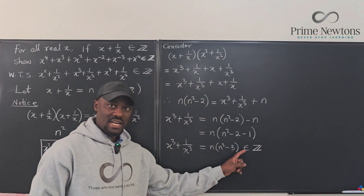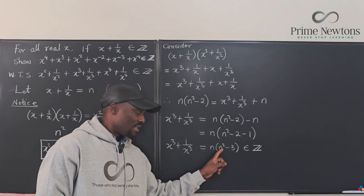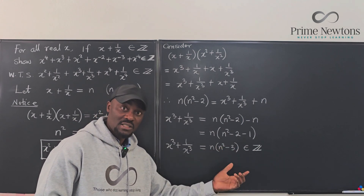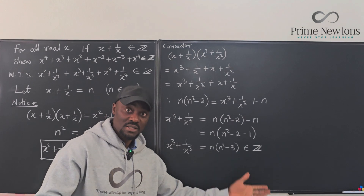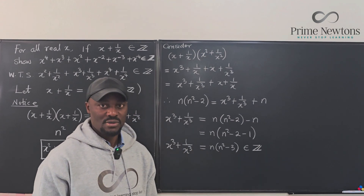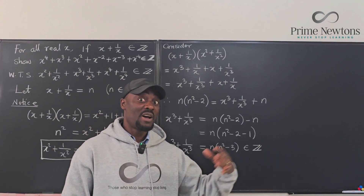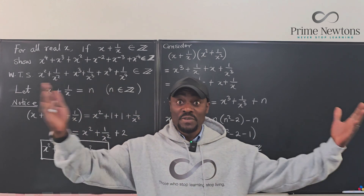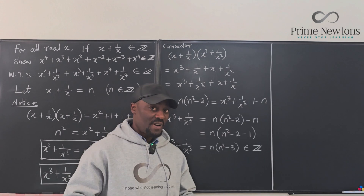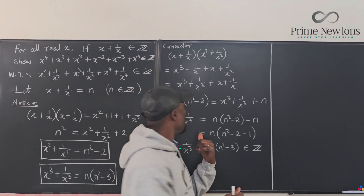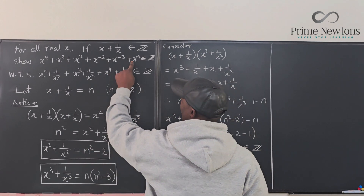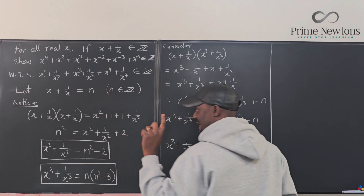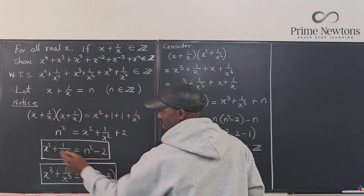We've shown that x cubed plus 1 over x cubed is an integer because the square of an integer is an integer, the difference between two integers is an integer, and the product of two integers is an integer. So the final task is to handle x to the fourth plus 1 over x to the fourth.